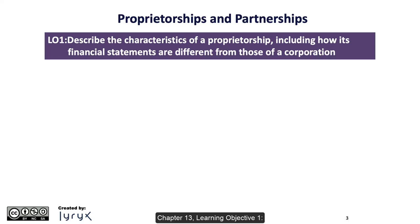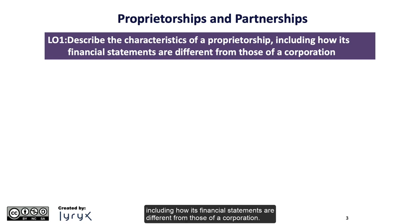Chapter 13, Learning Objective 1: Describe the characteristics of a proprietorship, including how its financial statements are different from those of a corporation.